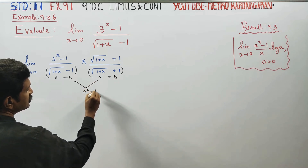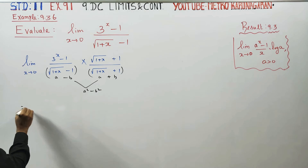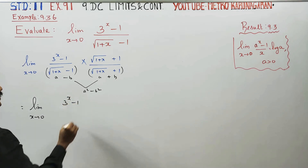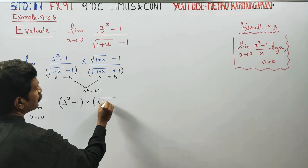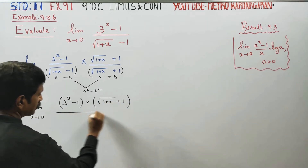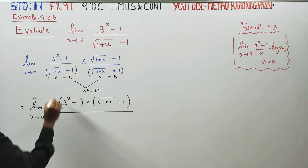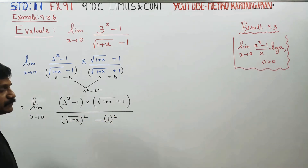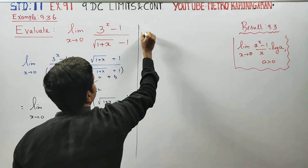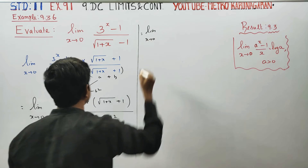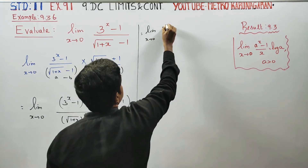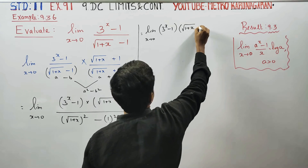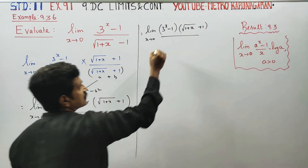Multiplying by the conjugate gives (a - b)(a + b) = a² - b² in the denominator. So limit x turns to 0: (3^x - 1) times (√(1+x) + 1) in the numerator, and the denominator becomes a² - b², where a = √(1+x), so a² = 1+x, and b = 1, so b² = 1, giving denominator = (1+x) - 1 = x after the square root cancels.